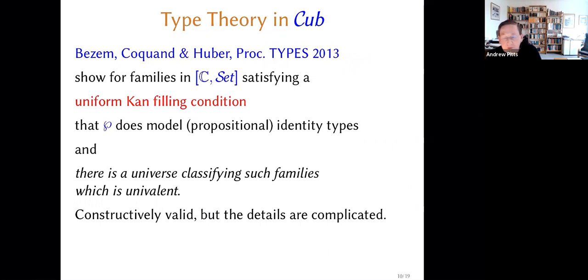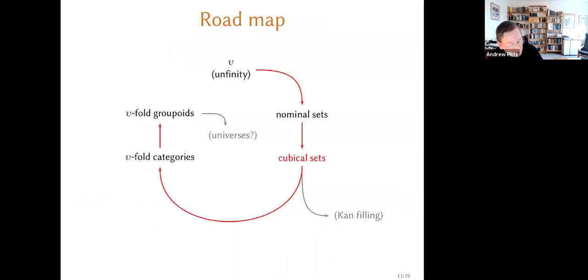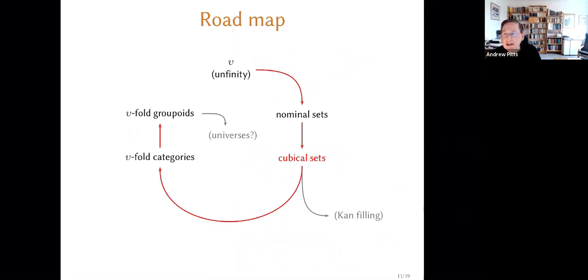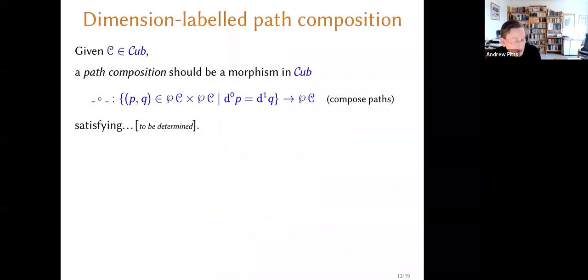What I have in mind is to take the fork in the road. Is it possible to do higher dimensional category theory in this setting and produce a model of univalent type theory? So we're at this point in the roadmap. Instead of going down the path of considering Kan-complete cubical sets and giving a nominal presentation of that work of BCH or similar things, we're going to go off down this other path. I want to think about what it might mean to have a high dimensional category structure in this setting where we've made dimensionality implicit.